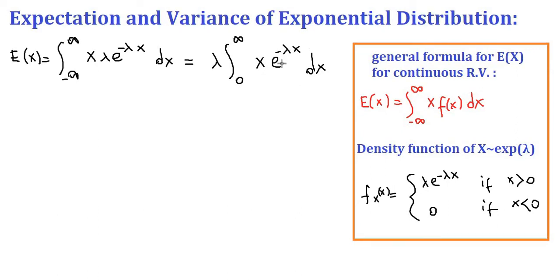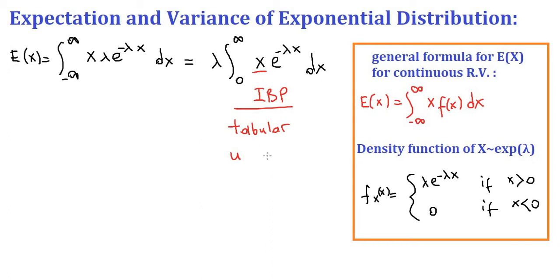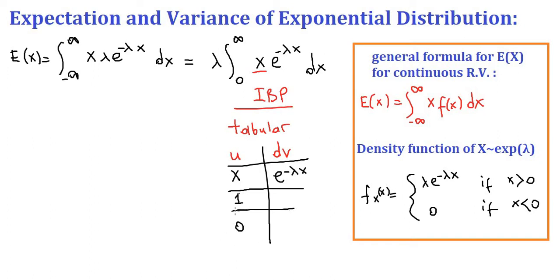Now we are going to integrate this function. You can either use integration by parts or u-substitution. I would like to apply the practical tabular method for integration by parts. We pick one function as u, which is x in our case, and the other function as dv, which is e^(−λx). We differentiate u — the derivative of x is 1, and the derivative of 1 is 0, so we are done for that column. The antiderivative of e^(−λx) is −(1/λ)e^(−λx).